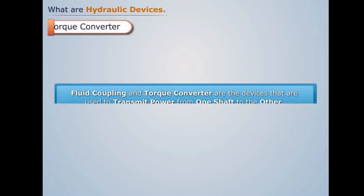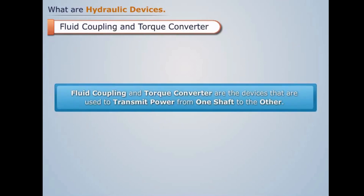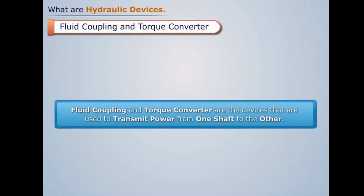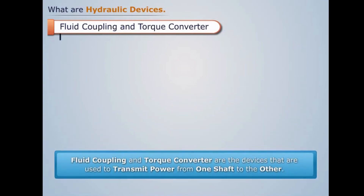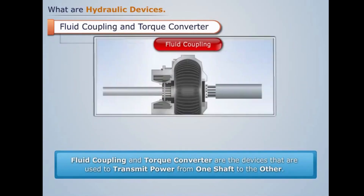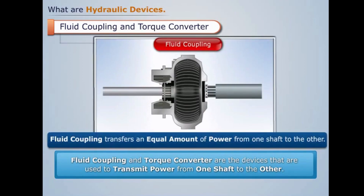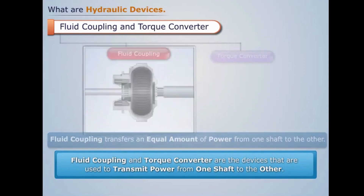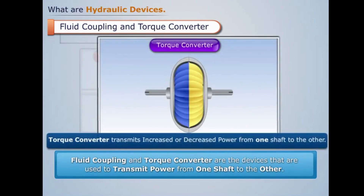Fluid coupling and torque converter are devices used to transmit power from one shaft to the other. Fluid coupling transfers an equal amount of power, whereas torque converter transmits increased or decreased power from one shaft to the other.